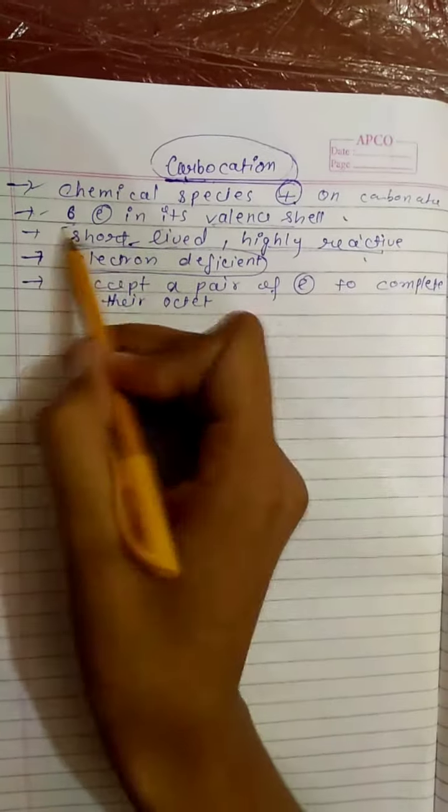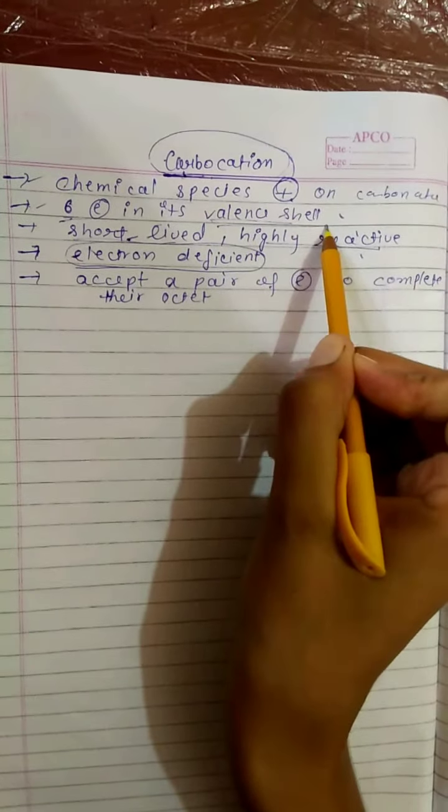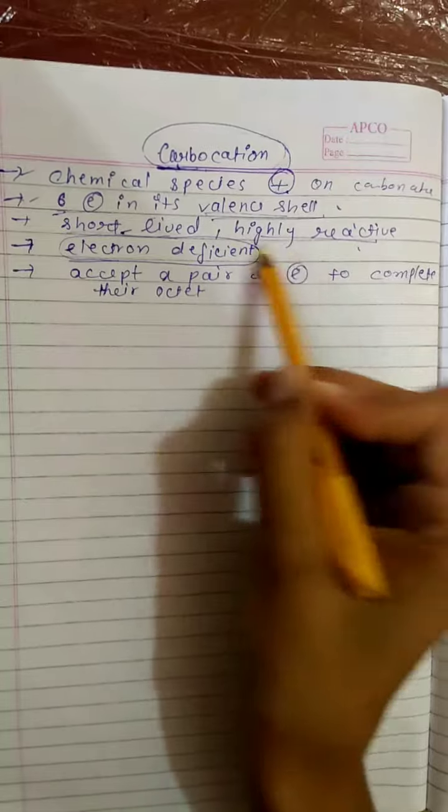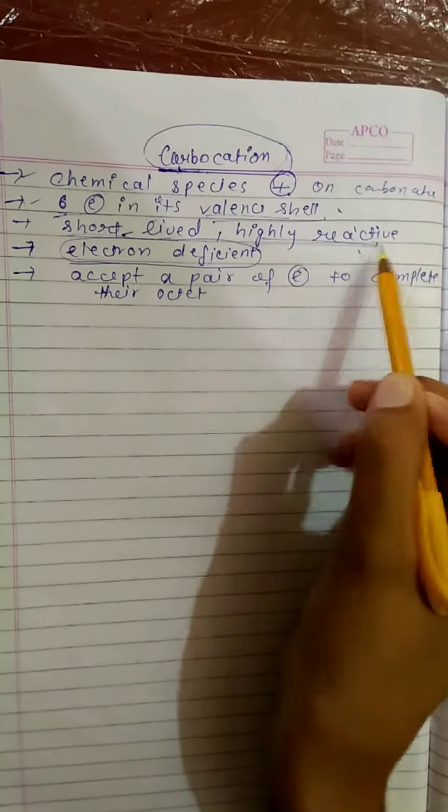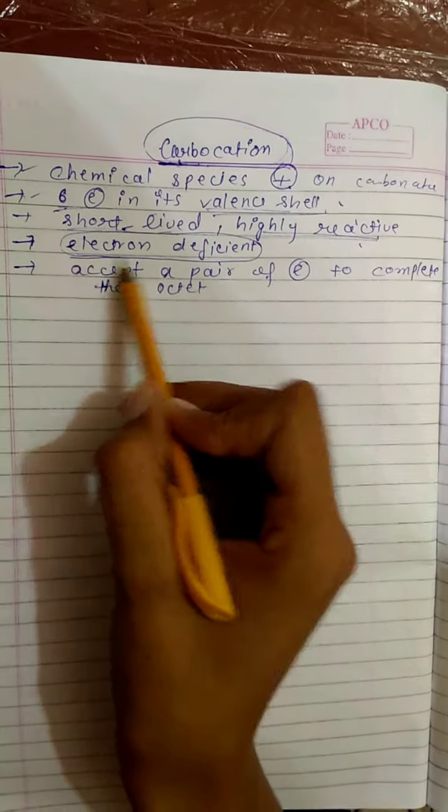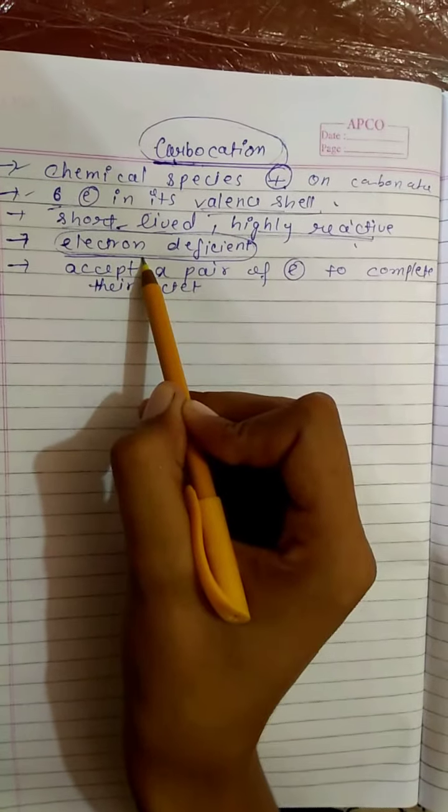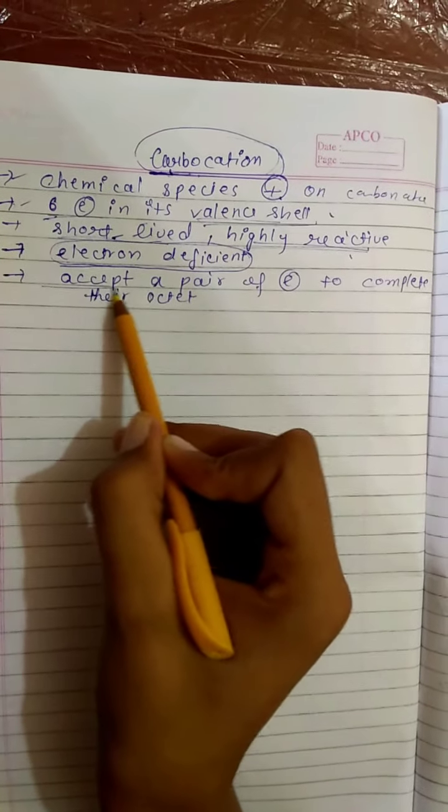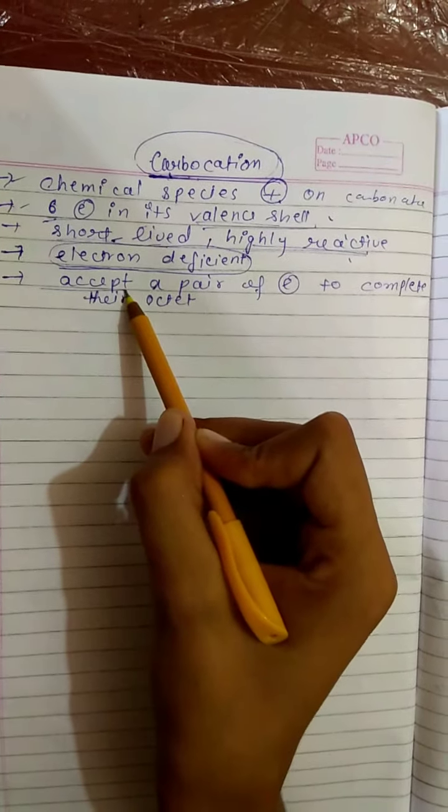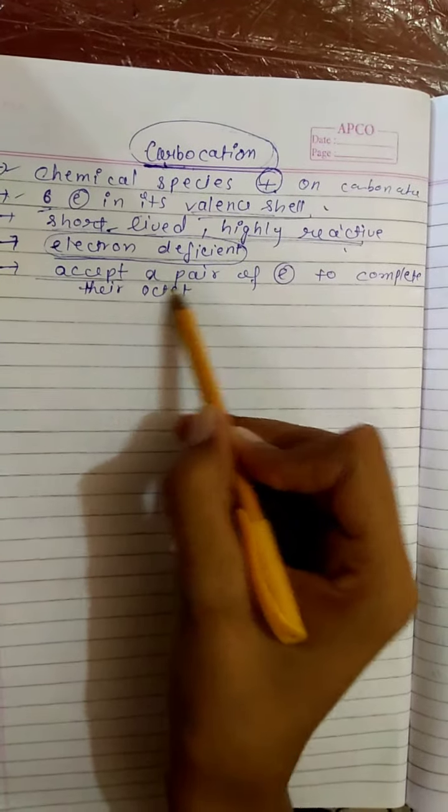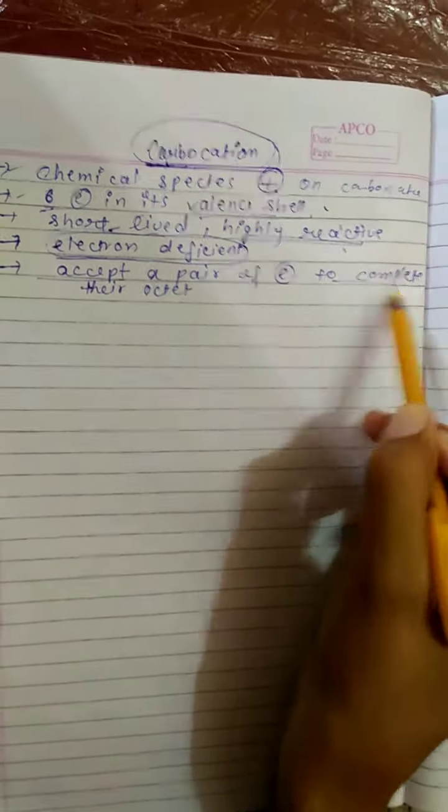Carbocations have 6 electrons in its valence shell and they are short-lived and highly reactive species. As carbon is positively charged, they are electron deficient species. As electron deficient species, they can accept a pair of electrons to complete their octet.